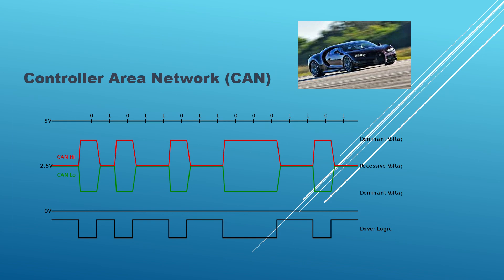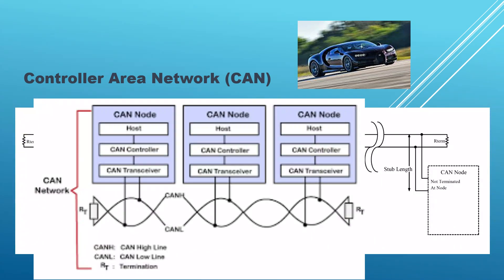In a CAN network, each electronic device or node has a unique identifier and can transmit messages to other nodes. CAN messages can be sent in real time, allowing for quick and efficient communication between different parts of a system. CAN is also designed to be scalable, allowing for the addition or removal of nodes without the need for significant changes to the overall system.